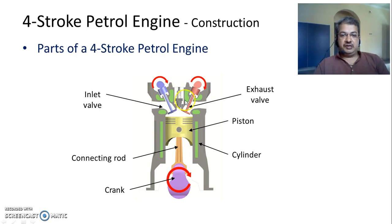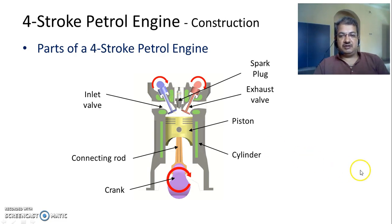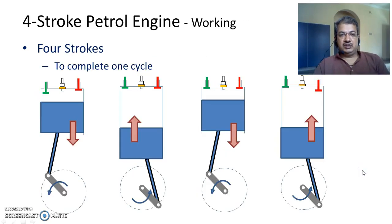In order to initiate combustion, we have a spark plug in a petrol engine which initiates a spark to ignite and initiate combustion inside the cylinder. Now, when we say four-stroke petrol engine, we need to understand what these four strokes indicate.